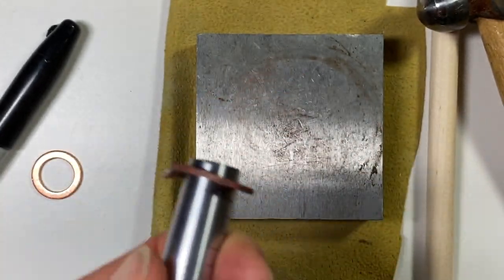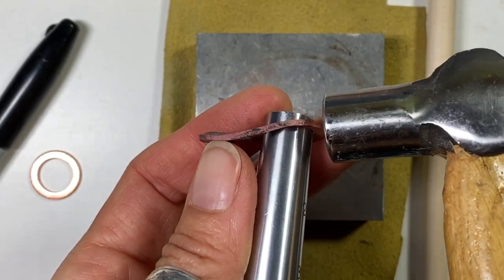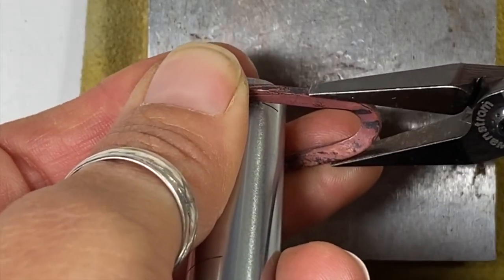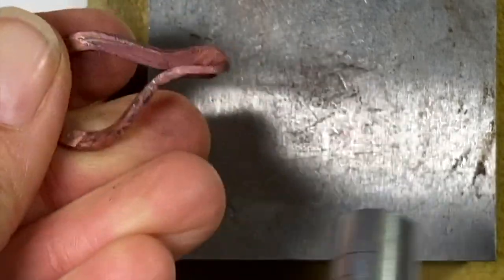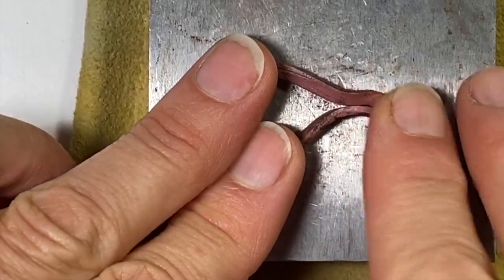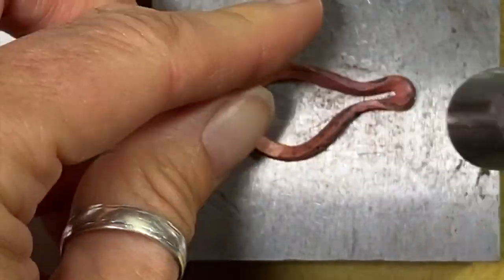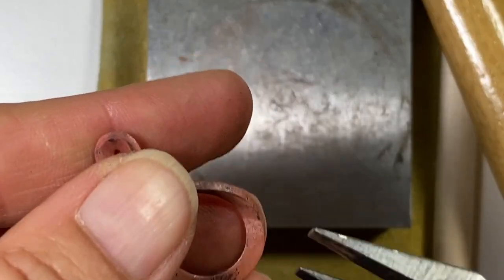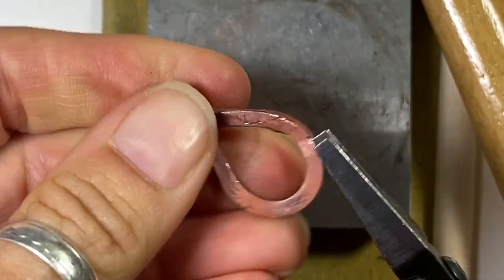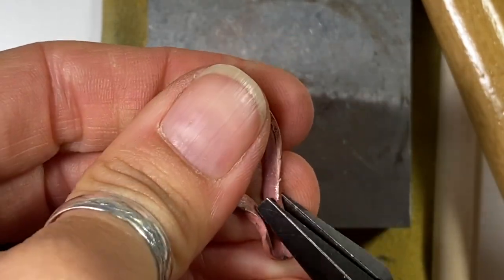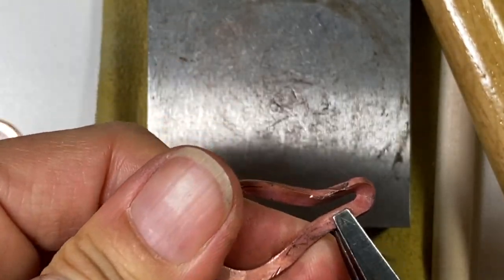I went to anneal it again and I think I'm going to use my ring mandrel to shape it now. I didn't think of that before. It looks a little wrinkled but I gotta pound that out, and I think I'm going to use my ring mandrel to shape it now.